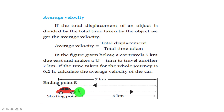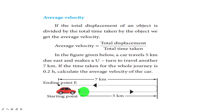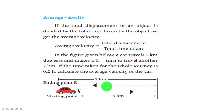Consider a car that starts from point A, travels 5 km due east, makes a U-turn, and travels another 7 km in the opposite direction. The total time for the journey is 0.2 hours. Since the directions are opposite, displacement equals 5 minus 7 equals minus 2 km. Average velocity equals minus 2 divided by 0.2 equals minus 10 km/hr.